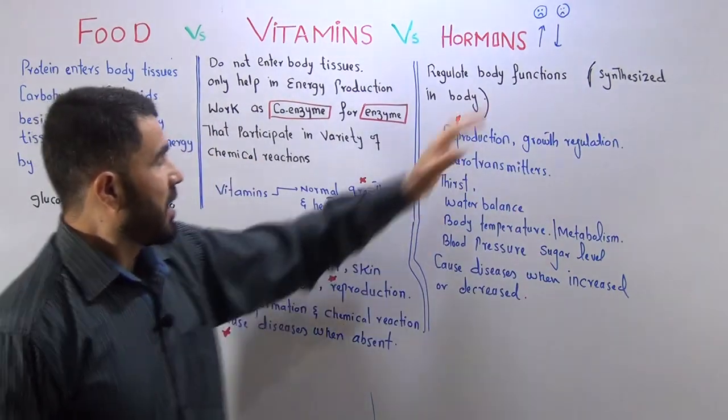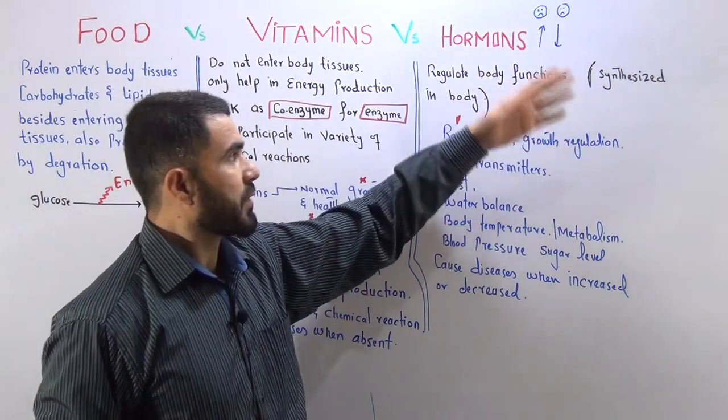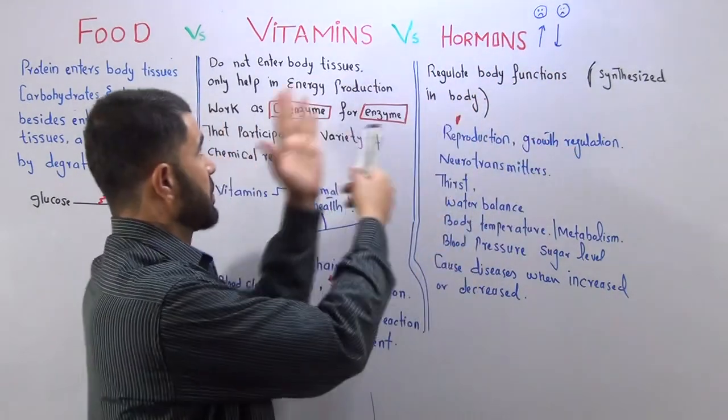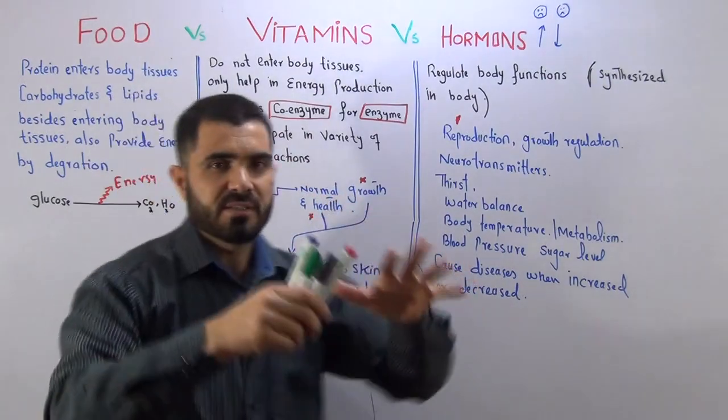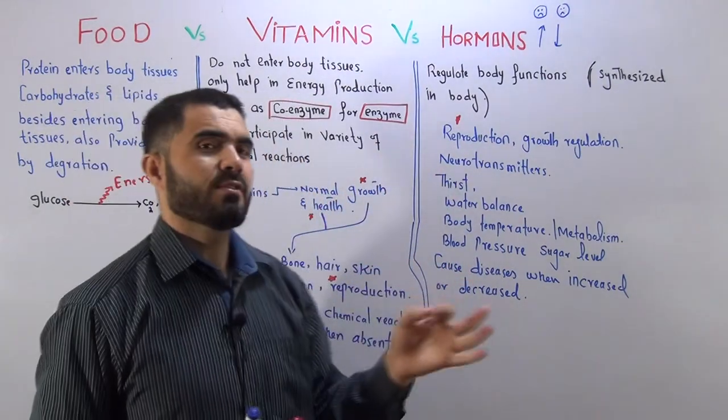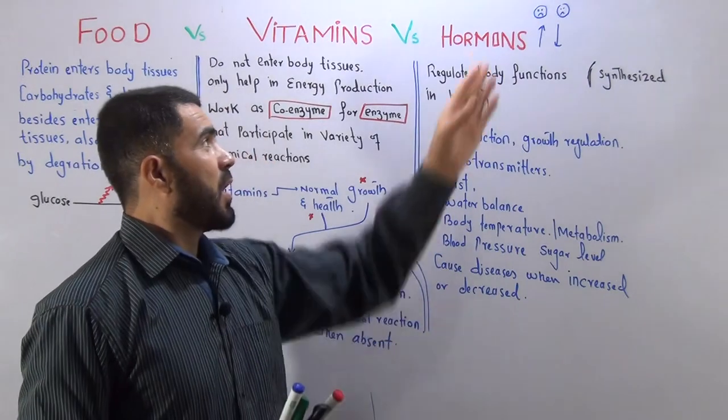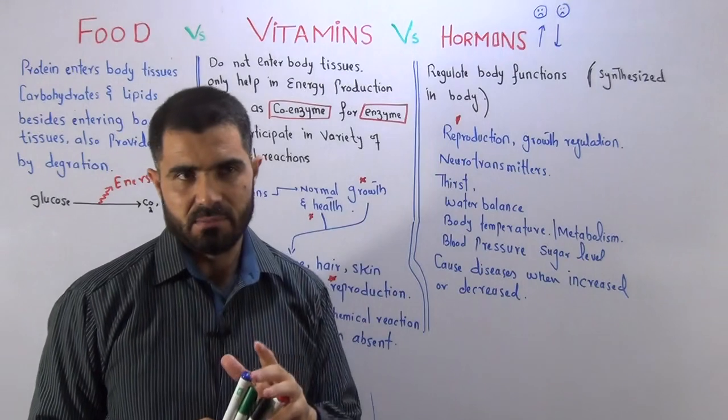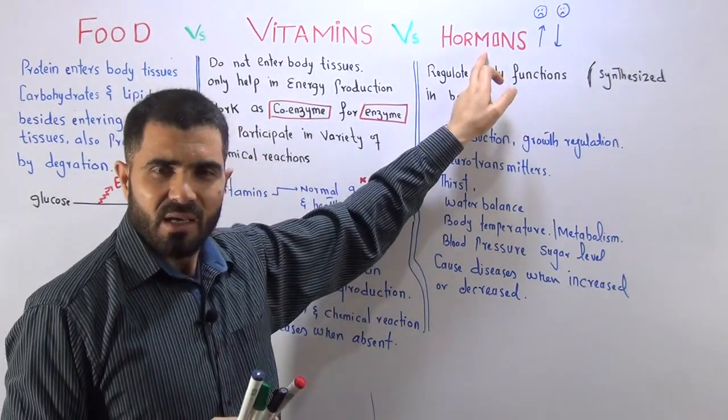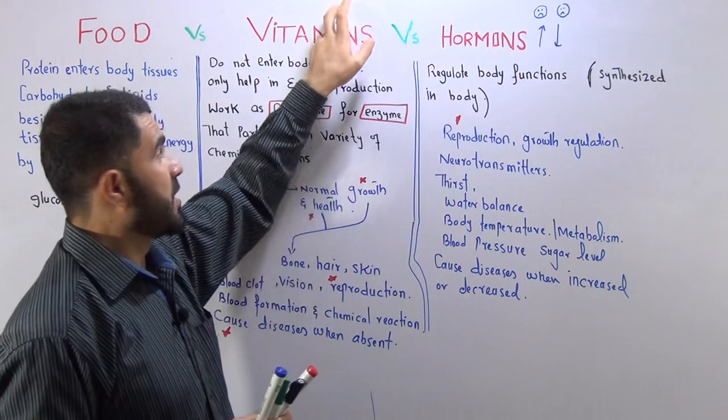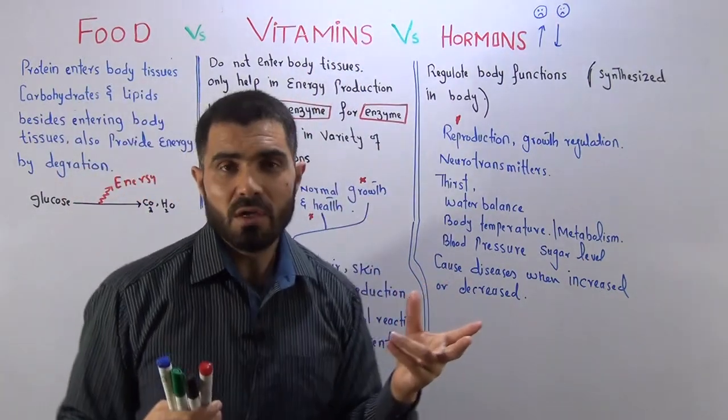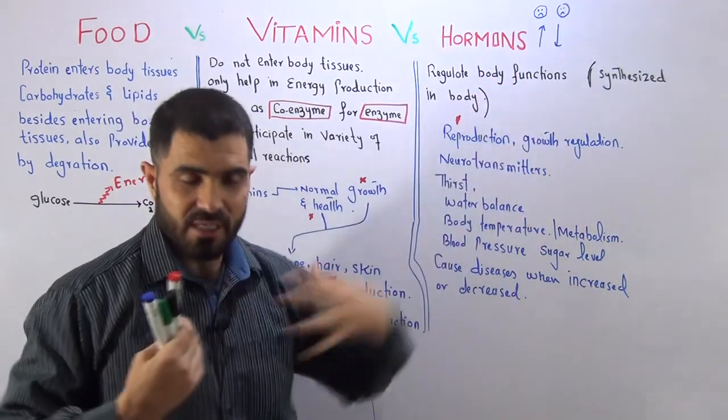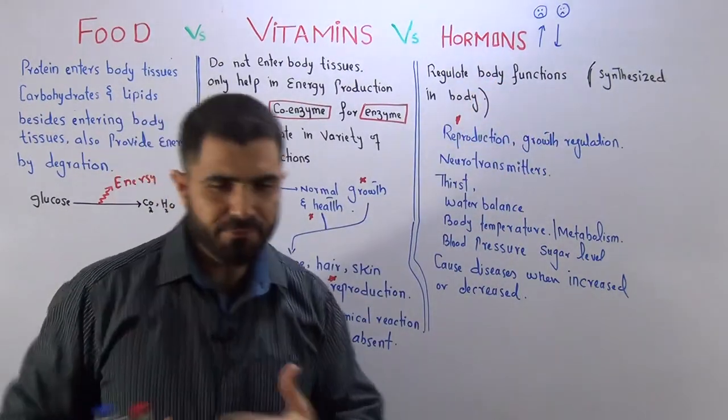Now if we come to the hormones and we study these hormones in comparison with vitamins, we will see some very interesting things. The very first thing is that hormones are like vitamins. They are like vitamins how? Hormones are organic molecules, vitamins are organic molecules. Both are organic molecules. Both regulate body functions. In our body they regulate functions, variety of functions.